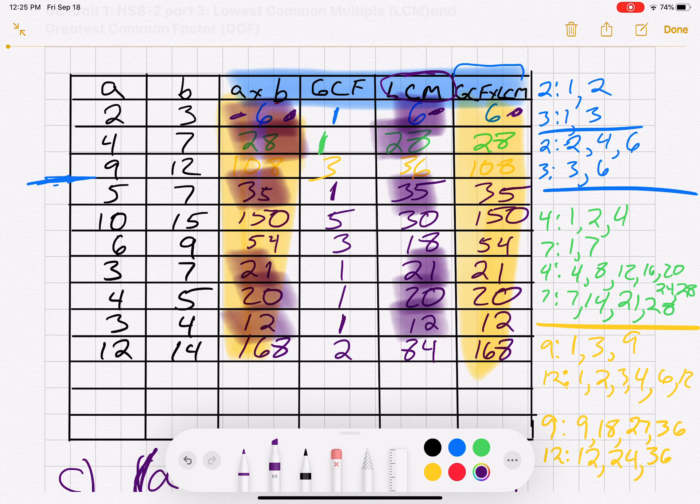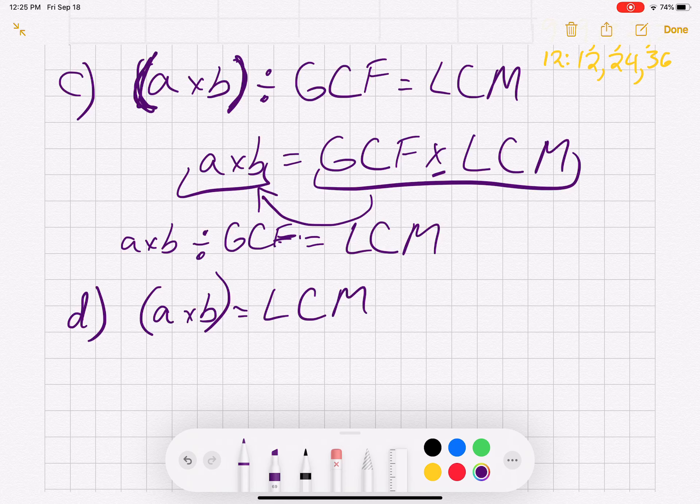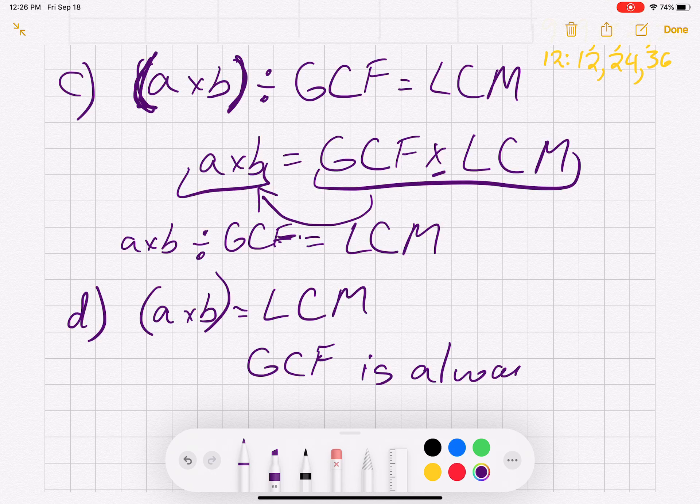Now, for those ones, what is the greatest common multiple for each, or greatest common factor, sorry, for each, and it's one. And so that would be the greatest common factor is always one.